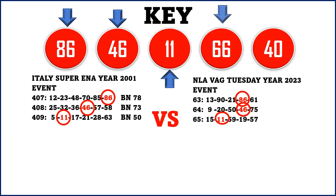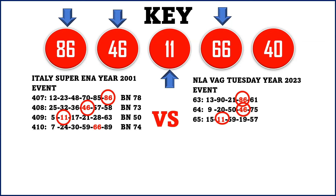The next sequence number is 66. For Super Enalotto results number 410, we have 7, 24, 30, 59, 66, and 59 with BN 74. For the NLA lotto results 67, the numbers drawn were 2, 46, 88, 66, and 67. Both results produced 66, confirming it as the next sequence number. This is the second to last sequence number.